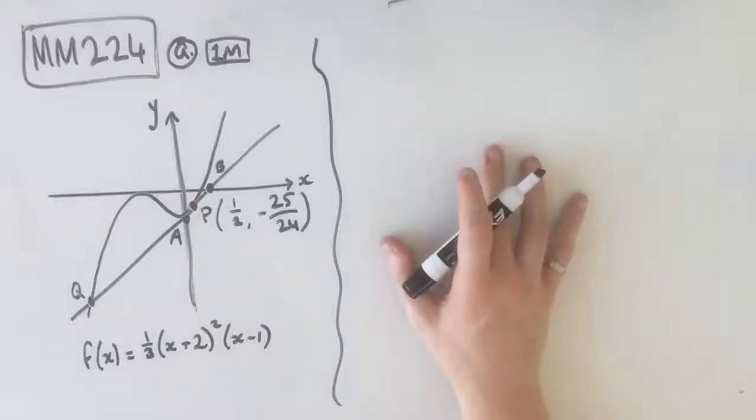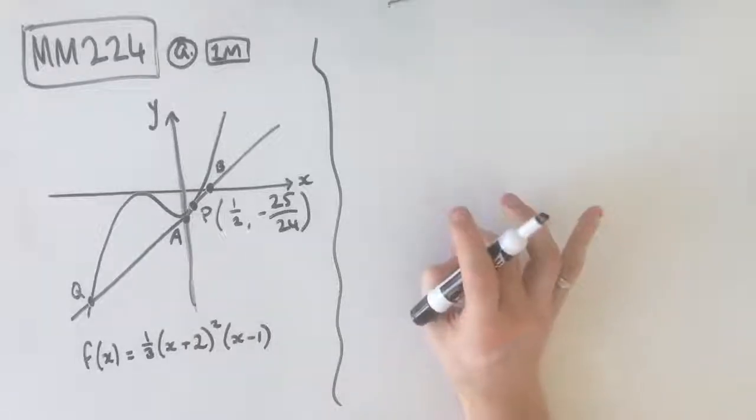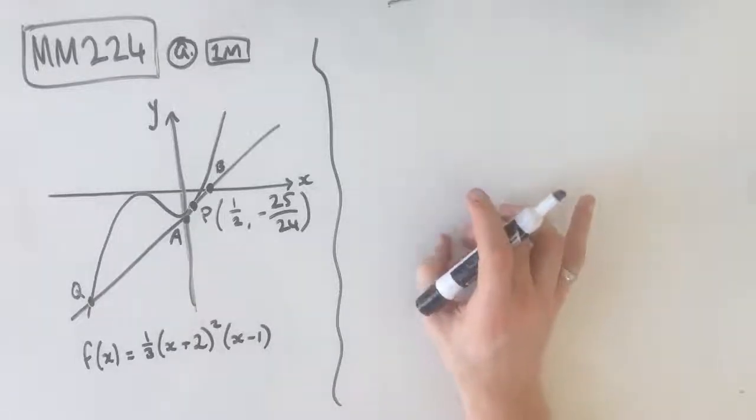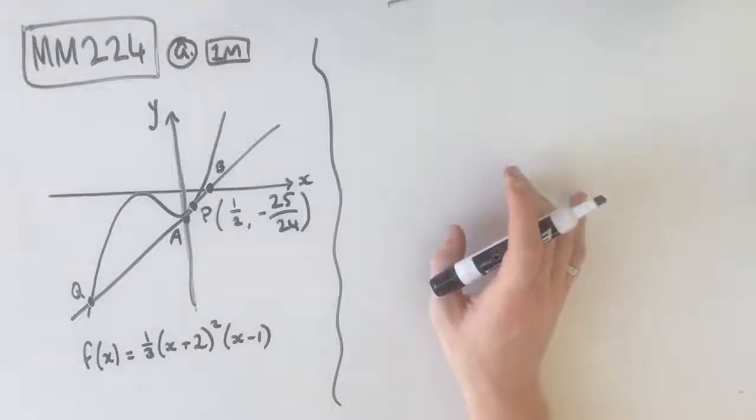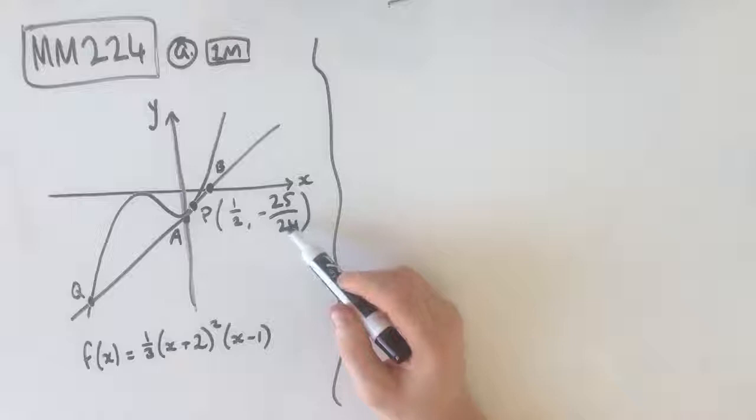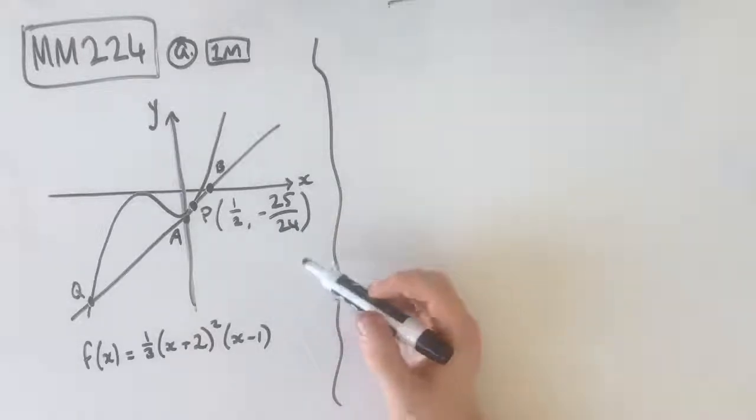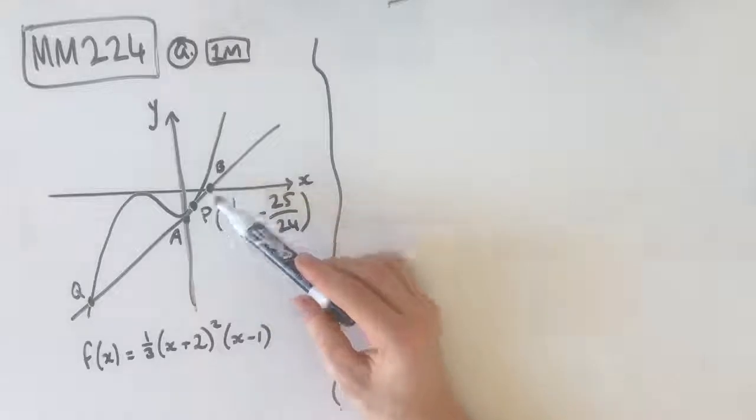Hey guys, welcome to question MM224 of the Maths Methods Fortify study guide. The question tells us, consider the function f(x) equals 1/3 times (x+2)² times (x-1), and it tells us that the point P(1/2, -25/24) is on the graph of f as shown below. The tangent at P cuts the y-axis at A and the x-axis at B.